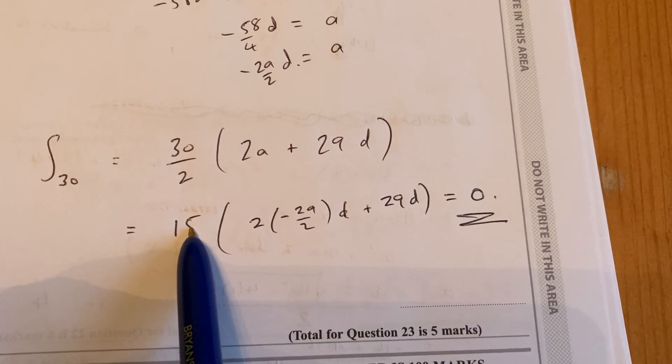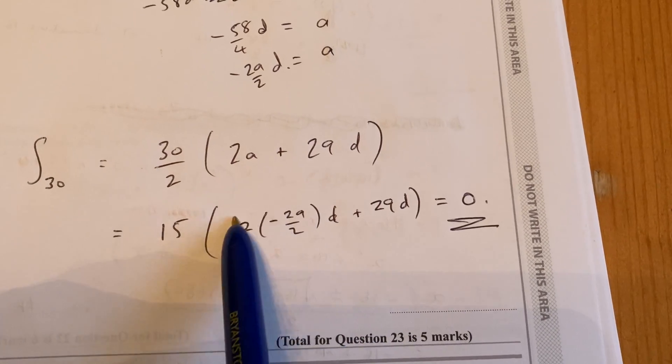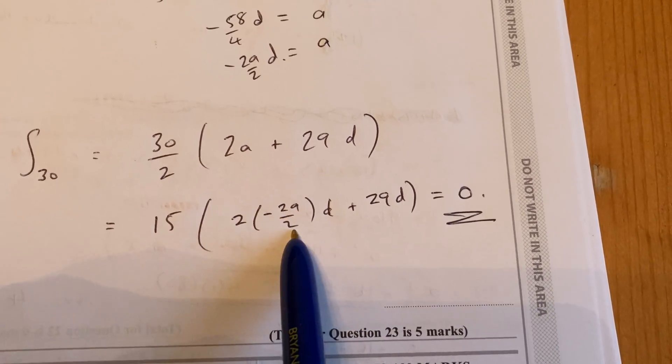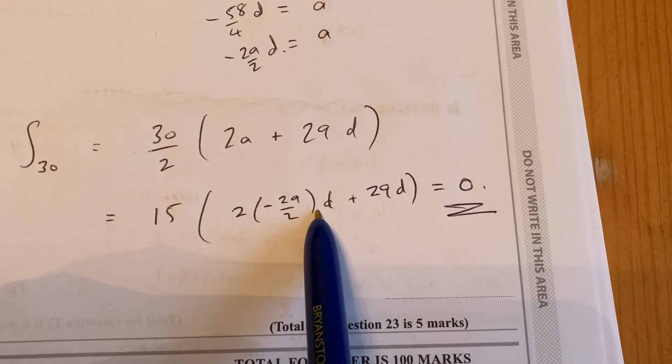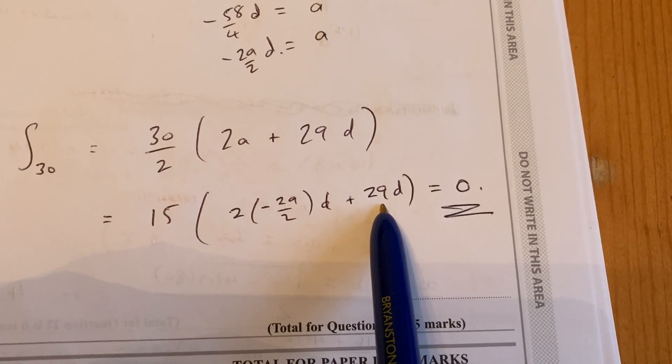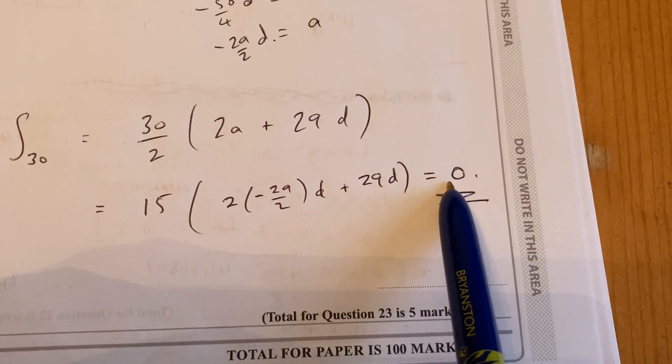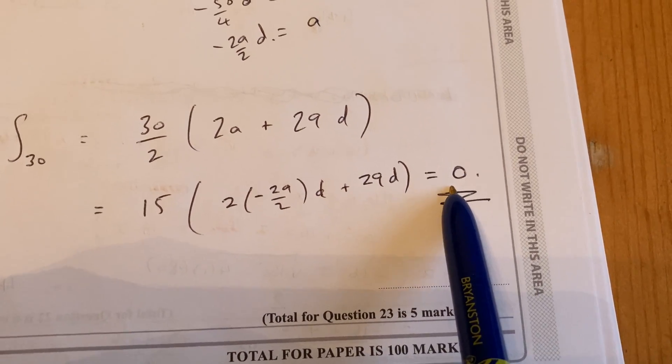Simplify at the front, it comes to 15. Now, this is where the little trick is. If you do two lots of this, the twos will cancel and you'll end up with minus 29d plus 29d. So in the bracket is 0. And when you multiply it out by 15, the answer will come out as 0.